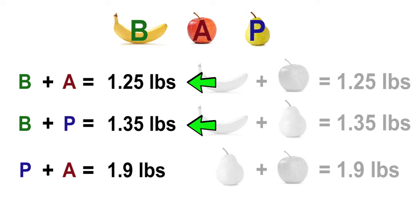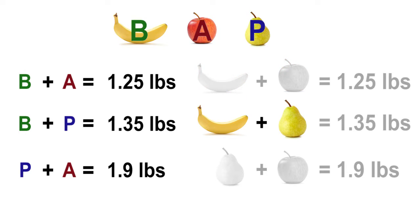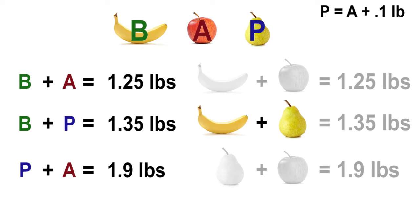Let's start by looking at the first two equations. The second equation is one-tenth of a pound more than the first equation. Both equations have a banana. The pear and apple are the different variables in the equations. The second equation with the pear is one-tenth more than the equation with the apple. Therefore, the pear weighs one-tenth more than the apple. This means that p, the pear, can also be thought of as an apple plus one-tenth of a pound, or a plus one-tenth of a pound.